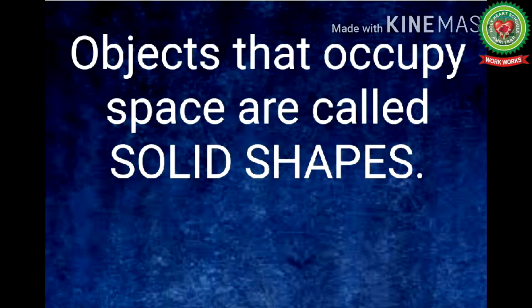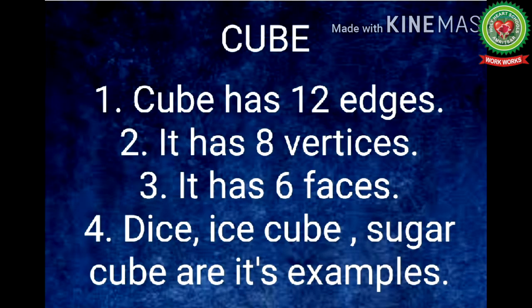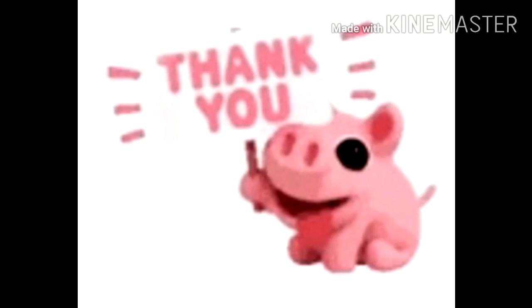Now let's recall what we have learnt today. First we have learnt the meaning of solid shapes, then its examples, then about cube — note that it has 12 edges, 8 vertices, 6 faces. Ice cube and sugar cube are its examples. So kids, I hope you all understood the meaning of solid shapes, its examples, and learnt how to draw and define cube on copy. Take out your homework and do your work. Thank you.